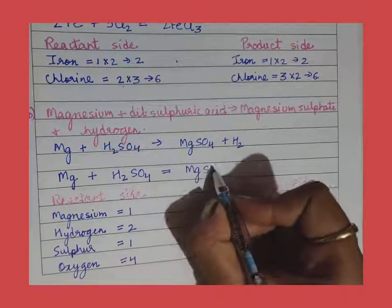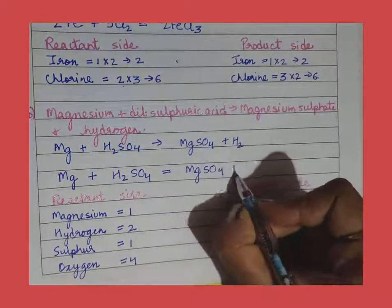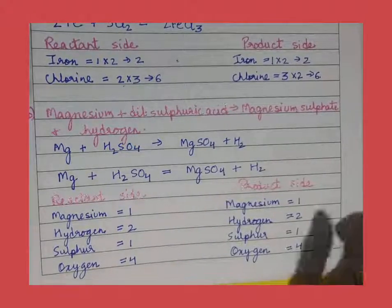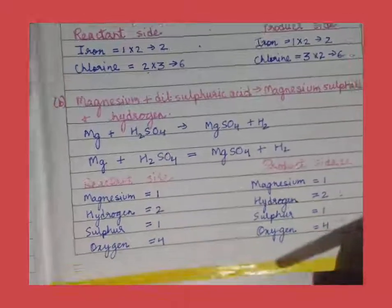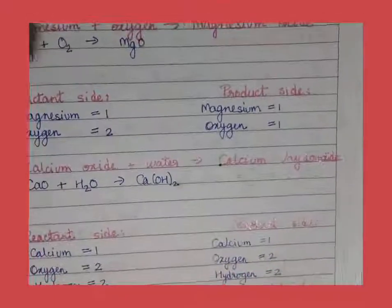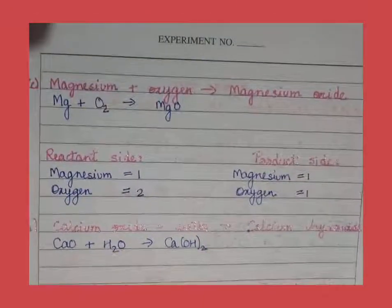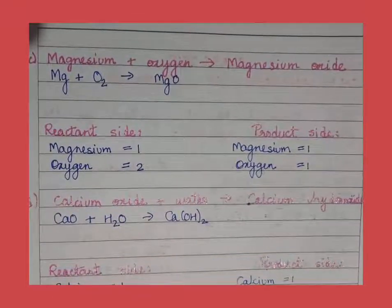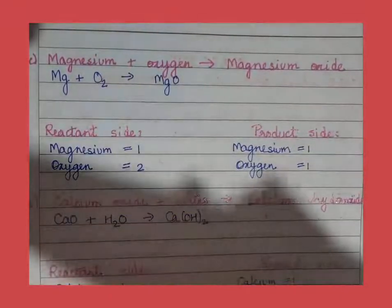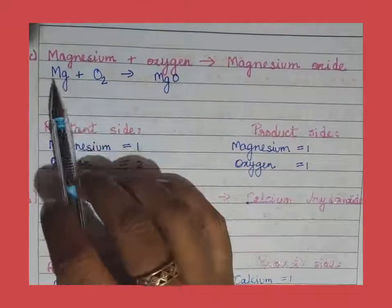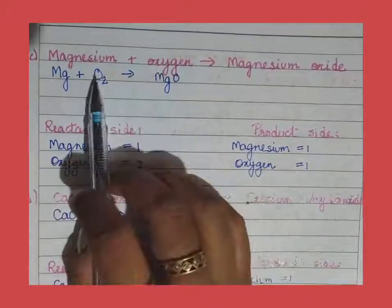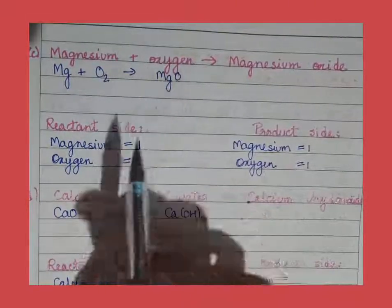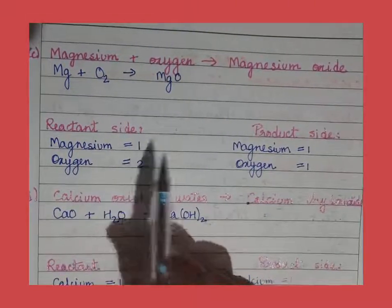You can put the sign of equality only after balancing the chemical equation. Now let us move to the next example: when magnesium reacts with oxygen to give magnesium oxide. Magnesium is Mg, oxygen is O₂, and magnesium oxide formula is MgO. On the reactant side there is 1 magnesium and on the product side also 1 magnesium.